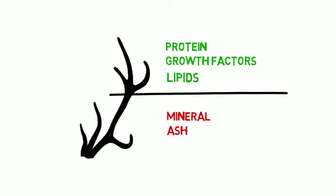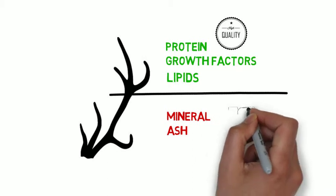Because the tips and upper parts of deer antler velvet are rich in protein, growth factors, and lipids, they are more valued due to the higher concentration of active ingredients. The base and bottom segments, on the other hand, have a high mineral and mineral ash content. As less effective, deficient parts of the antler, these segments are the least desired.